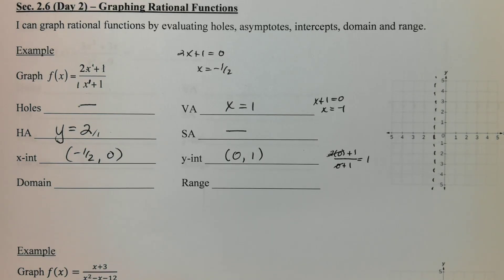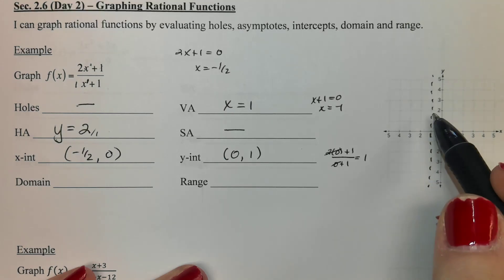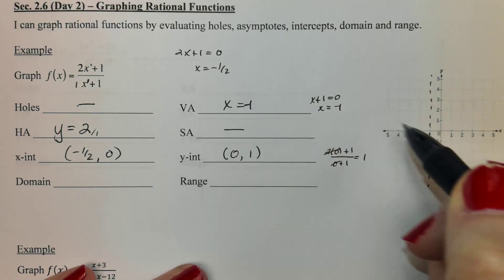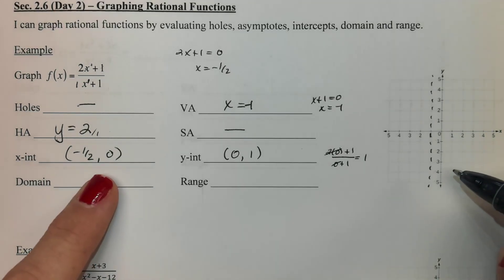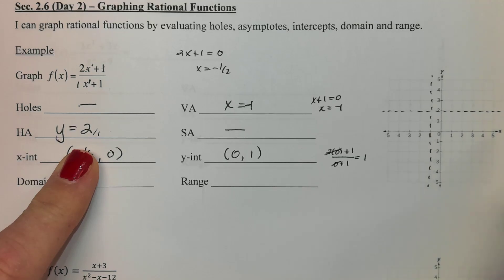So we're going to go ahead and graph the function and then we'll come back and do the domain and range. So I have my vertical asymptote. Oh sorry that was negative one. I didn't put a negative one there. We graphed it right. I just didn't put the negative. Horizontal asymptote is at two. So let's go ahead and get that on there. Dotted line.